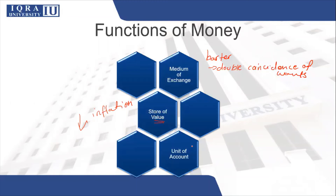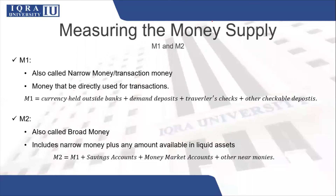The last property is unit of account, which means a standard unit that provides a consistent way of quoting prices. So you can easily put any cost on anything — something for 5 rupees, 100 rupees, 105 rupees. Now we have discussed all three functions of money: medium of exchange, unit of account, and store of value. These three characteristics can actually be applied to many other assets, so economists have given different names and different measures of money to define what counts as money.